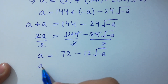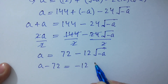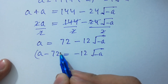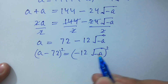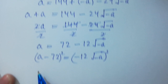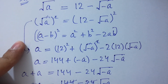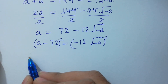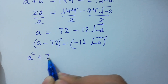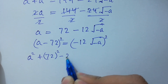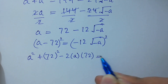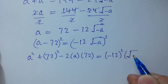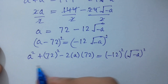A minus 72 equal to minus 12 square root of minus a. Again, take square on both sides. Apply the formula of a minus b whole square. A squared plus 72 squared minus 2 times a times 72 equal to minus 12 squared times square root of minus a squared.